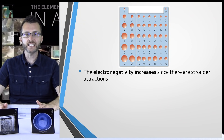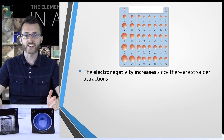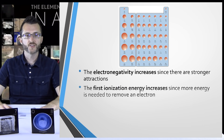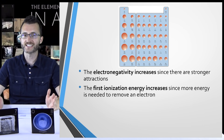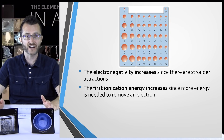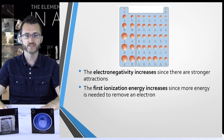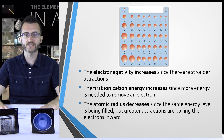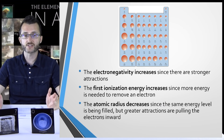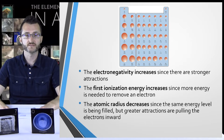So going across a period: electronegativity increases since there are stronger attractions; first ionization energy increases since more energy is needed to remove an electron — it's harder to remove; and atomic radius decreases since the same energy level is being filled but greater attractions are pulling the electrons inward.